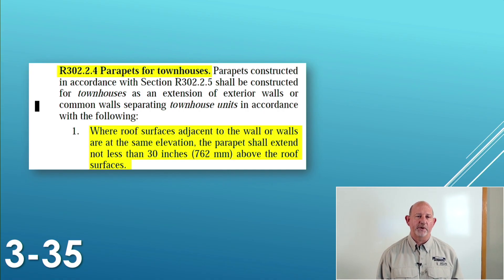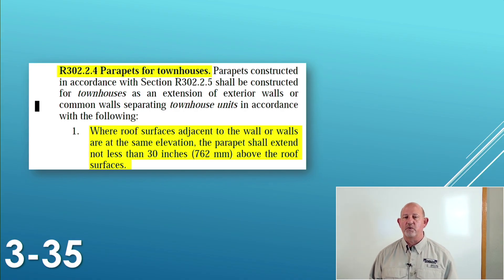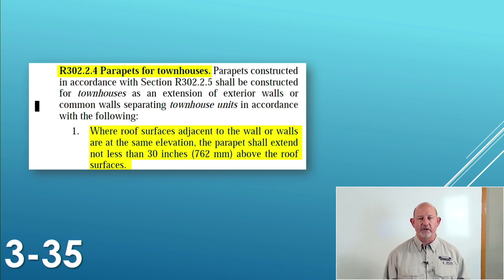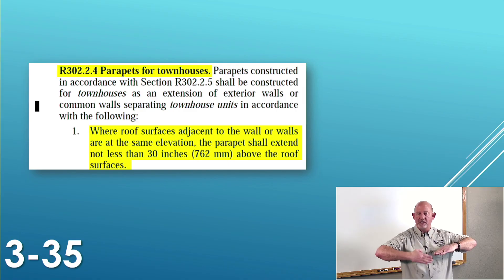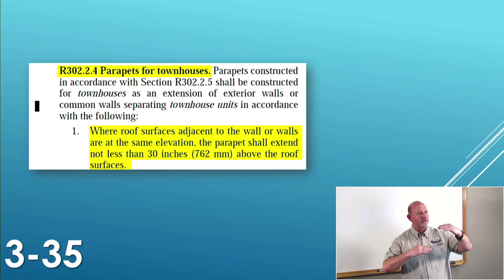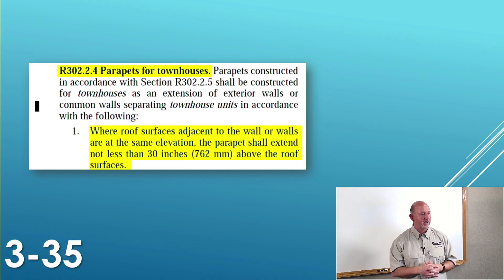Highlight R302.2.4, parapets for townhomes. Down below that, number one: if your townhome and my townhome have roofs at the same height, we need a parapet between them. That parapet has to be 30 inches above the roof. If you keep reading .2 or .3 or .4, it will tell you that if they're not at the same level, the parapet has to be 30 inches above the higher one. But this says if the roofs are the same level, we've got to be 30 inches above it.